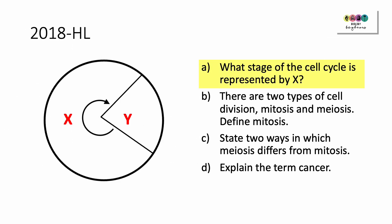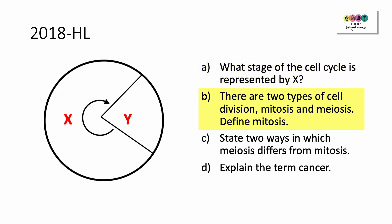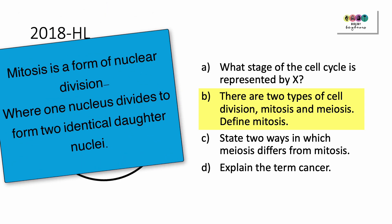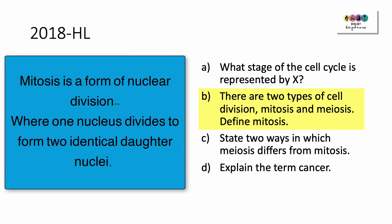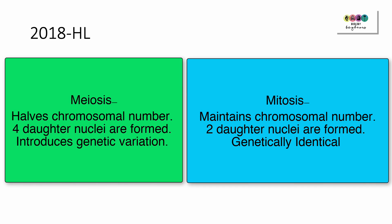2018: What stage of the cell cycle is represented by X? It's interphase — the longest part of the cell cycle. There are two types of cell division: mitosis and meiosis. Define mitosis: it is a form of nuclear division where one nucleus divides to form two identical daughter nuclei. State two ways in which meiosis differs from mitosis: meiosis halves chromosomal number while mitosis maintains it; meiosis produces four daughter nuclei but mitosis produces two; and in meiosis genetic variation is introduced, whereas in mitosis all nuclei are genetically identical.